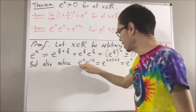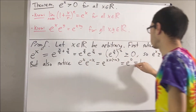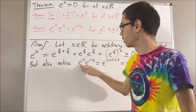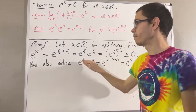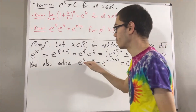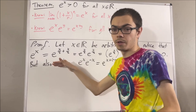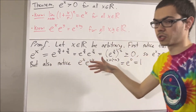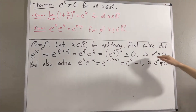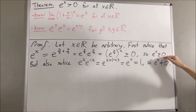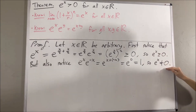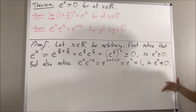Because e to the x times e to the negative x is equal to 1, e to the x can't be equal to zero. If e to the x were 0, we would have 0 times e to the negative x equals 1. But 0 times e to the negative x also equals 0, so we would have 0 equals 1, which is not possible. So e to the x is greater than or equal to 0, but e to the x is not equal to 0, which means e to the x must be strictly greater than 0.